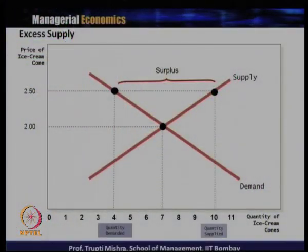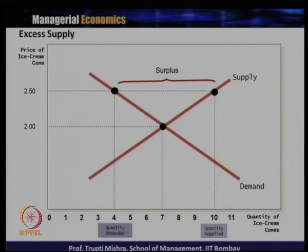Graphically, this is the representation of excess supply: supply is more than demand and there is a surplus situation. Initially the equilibrium is 7 units with an equilibrium price of 2 rupees. If the price is 2.5 rupees, which is more than the equilibrium price, supply increases from 7 units to 10 units and demand decreases from 7 units to 4 units. The gap between 4 units and 10 units is the surplus — the quantity supplied exceeds quantity demanded.